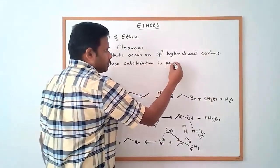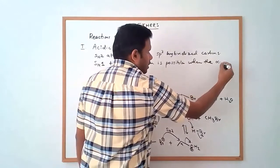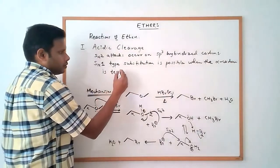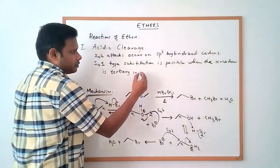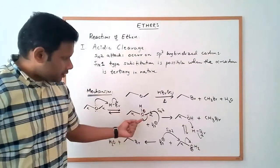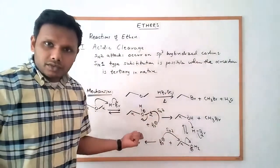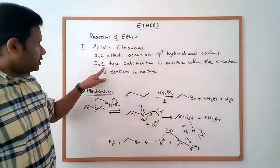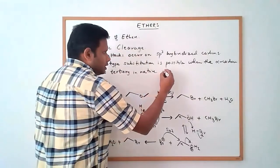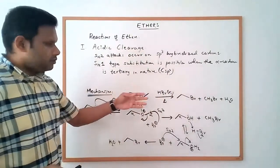If you have a tertiary carbon somewhere here, it is possible to get an SN1-type substitution. SN1-type substitution is possible when the alpha carbon is tertiary in nature. So if the alpha carbon is tertiary, at either of these steps it is possible that the bromide comes in via an SN1-like mechanism. But whether it's SN1 or SN2, you need carbons that are sp3 hybridized.